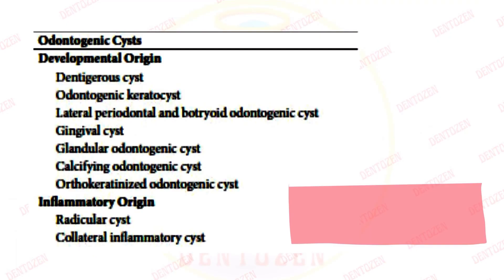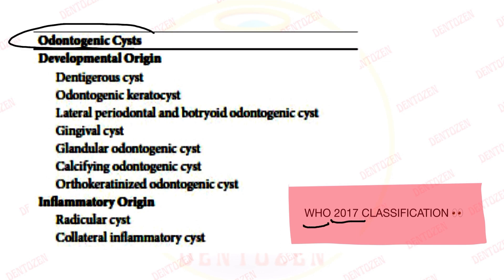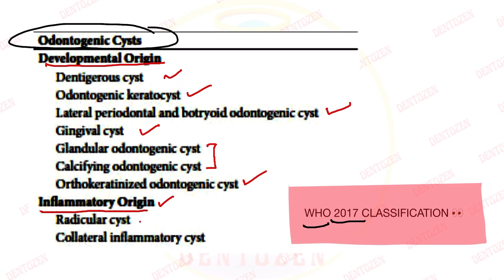You may also be asked about the WHO 2017 classification of odontogenic cysts. In 2017 WHO classified odontogenic cysts based on origin as developmental or inflammatory. Developmental cysts include dentigerous cysts, odontogenic keratocyst, lateral periodontal and botryoid odontogenic cysts, gingival cysts, glandular odontogenic cysts, calcifying odontogenic cysts, and orthokeratinized odontogenic cysts. In inflammatory origin we have radicular cysts and collateral inflammatory cysts.